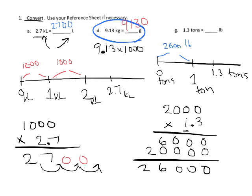So 1 times 0 is 0, 1 times 0 is 0, 1 times 2 is 2. And we add and we get 2,600. But we have to divide by 10 because we pretended that we multiplied by 10 here, so now we have to divide by 10 here. That gives us 2,600 pounds.